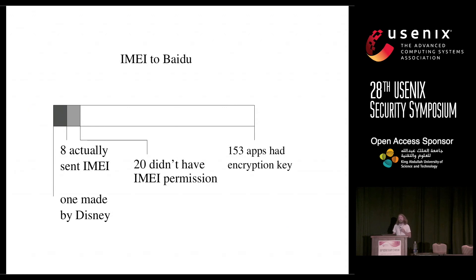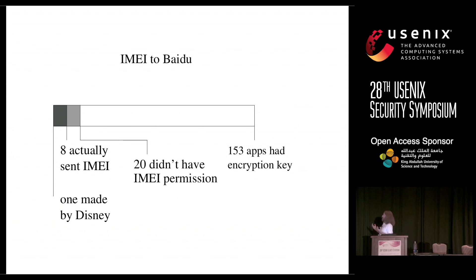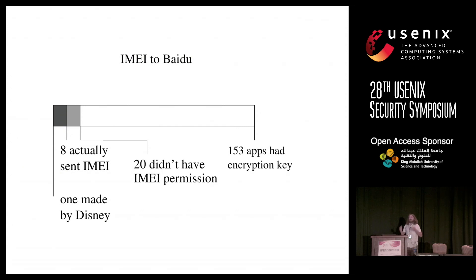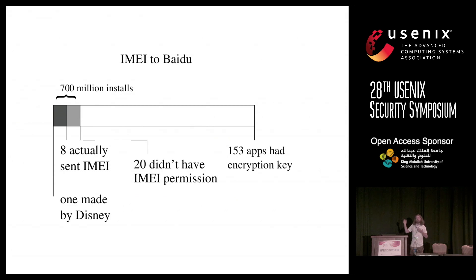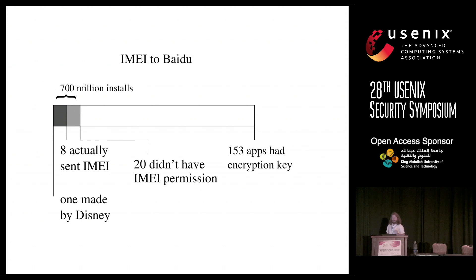One of those eight is made by Disney — the Disney Hong Kong Disneyland app. Disney is a big company, and this behavior is deceptive: they claim not to have the read phone state permission, yet they're accessing and sending the IMEI. If Disney is making apps that do this, it's a problem with trust in SDKs in general. While it's not that many apps, they correspond to 700 million installations — a significant problem even if the number of apps is small.